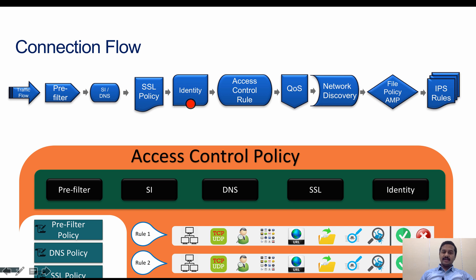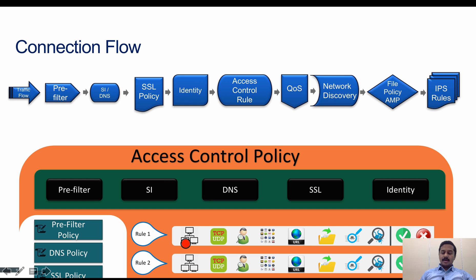Identity will have its own set of rules. If the traffic matches, then the identity policies are applied on that traffic. If it does not match, then it moves on to the next component, which is access control, where user-defined access rules are applied — inspecting IP address, zones, TCP, user, application, and URL. All these components are inspected at the access control rule level.